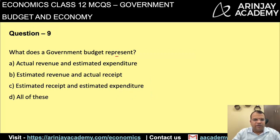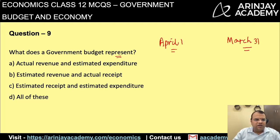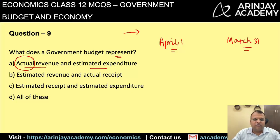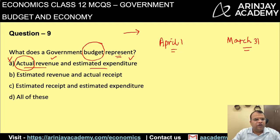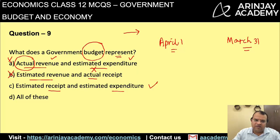What does a government budget represent? When you prepare a budget for April 1 to March 31, it does not reflect actual revenue and estimated expenditure — the answer is no, because the budget is always for a period yet to come. A budget is an estimate of both revenue and expenditure; it cannot have actual figures. Therefore, the correct answer is estimated receipt and estimated expenditure.